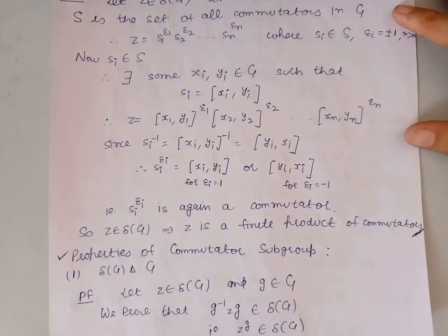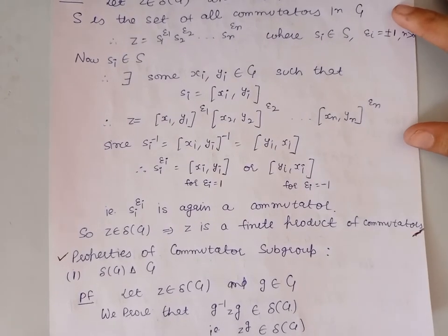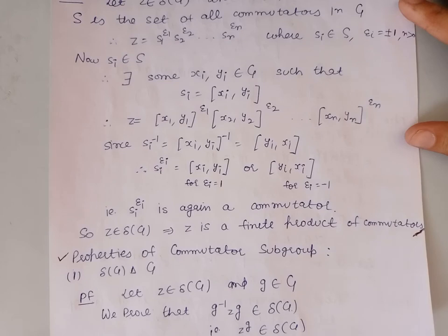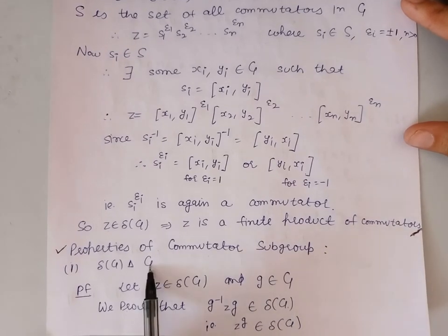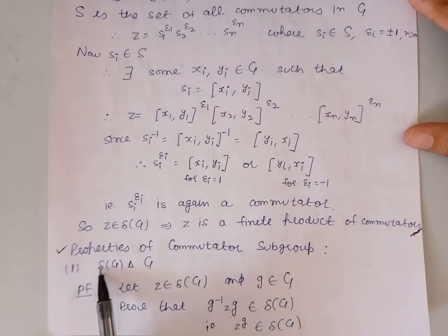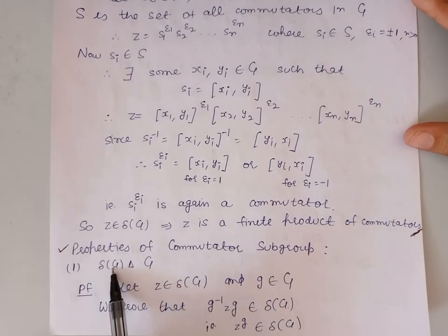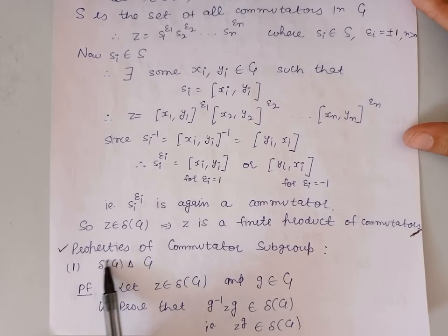Good morning students. Next we discuss the properties of the commutator subgroup of a group G. Let us take a group G. ΔG denotes the commutator subgroup of the group G. This is also called the derived subgroup of the group G.